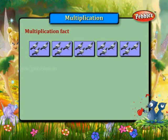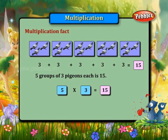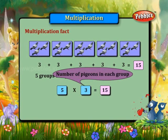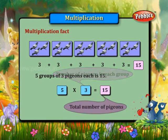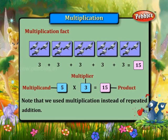Multiplication fact: Three plus three plus three plus three plus three is equal to fifteen. Five groups of three pigeons each is fifteen. The same can be written as five into three equals fifteen. The number of groups is five, the number of pigeons in each group is three, and the total number of pigeons is fifteen. Five is the multiplicand, three is the multiplier, and fifteen is the product. Note that we used multiplication instead of repeated addition.